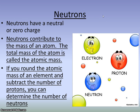Neutrons have a neutral charge and they contribute to the mass of an atom, just like protons. Protons and neutrons are the majority of the mass of an atom. The total mass of the atom is called the atomic mass — your protons, neutrons, and electrons together make up the atomic mass. If you round the atomic mass of an element and subtract the number of protons, that tells you the number of neutrons. The periodic table tells us the atomic number and atomic mass, so we can determine the number of neutrons from those values.